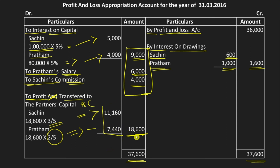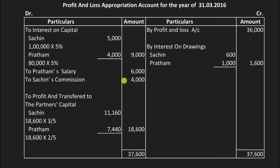To verify, 11,160 + 7,440 = 18,600, which confirms the calculation is correct. This is how you solve the Profit and Loss Appropriation Account problem. If you are not sure how to approach these problems, make sure you first understand the Profit and Loss Appropriation format from the previous video.